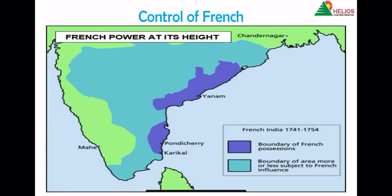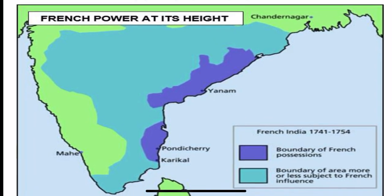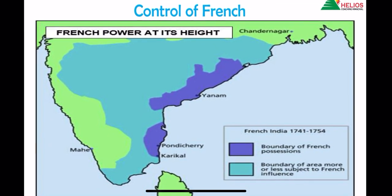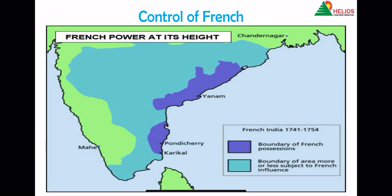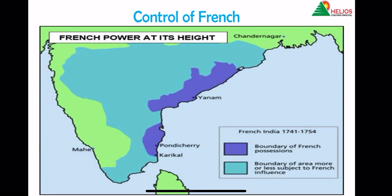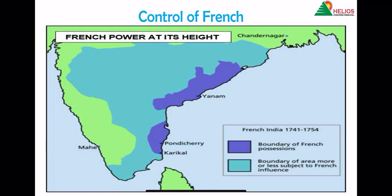During the Second Carnatic War, before Robert Clive took control, you can see that the French had almost the whole of the Deccan in their control. But just due to the tactics of Robert Clive and some incompetence from the French government — which could not give proper or quick decisions — the French lost control in India, and the Second Carnatic War ended in their defeat.